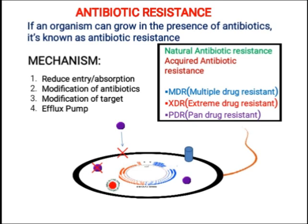چوتھا mechanism ہے efflux pump — یعنی بیکٹیریا by using energy اس antibiotic کو جو کہ bacteria کے cell کے اندر enter ہوئی ہے، اس کو پکڑ کر by using the efflux pump اس کو باہر بھیج دے۔ ان چار mechanisms کو use کر کے ایک بیکٹیریا resistance attain کرتا ہے۔